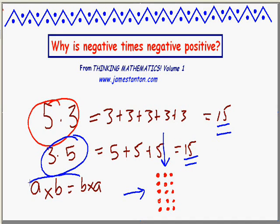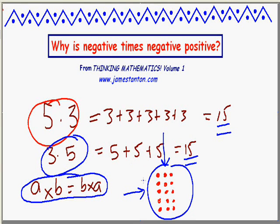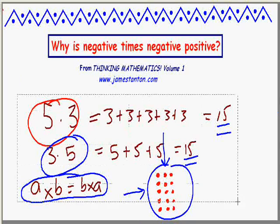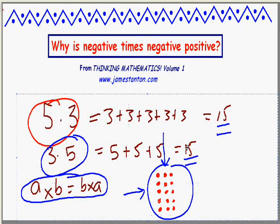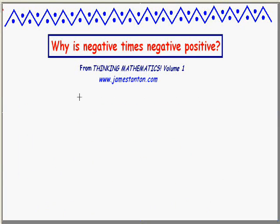Of course, it doesn't matter which counting numbers I use in particular — A times B is sure to be B times A by this geometric representation. So at least for positive counting numbers, we know what multiplication means and we know that multiplication is commutative.